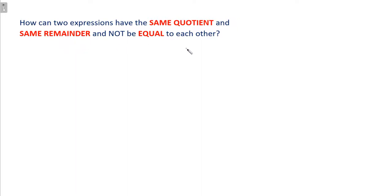So basically, how can you have two division problems that have the same quotient, same remainder, and not be equal to each other? And it's possible. This question might just be worded weirdly. So let's show you how this is possible.